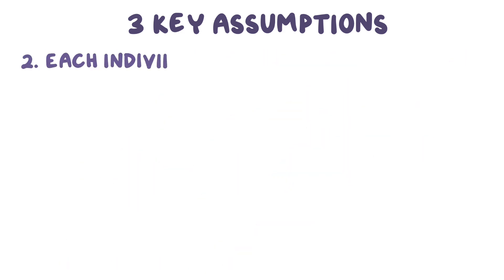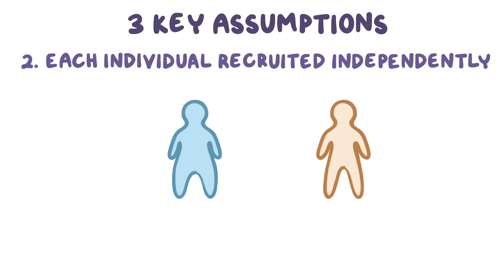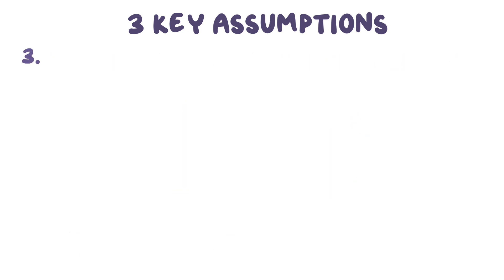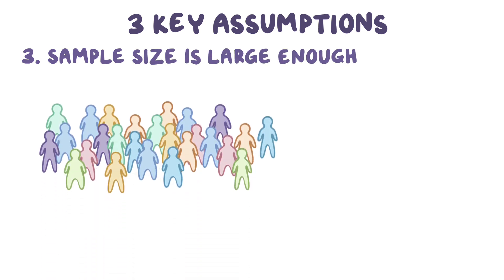The second assumption is that each individual in the sample was recruited independently from other individuals in the sample. In other words, no individuals influence whether or not any other individual was included in the study. For example, if two friends decided to get their blood pressures measured on the same day and were both included in the study, these two individuals would not be independent of each other, and the second assumption would not be met. Like random sampling, independent recruitment is important because it ensures that the sample population approximates the target population.